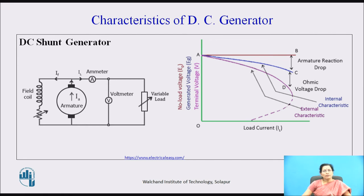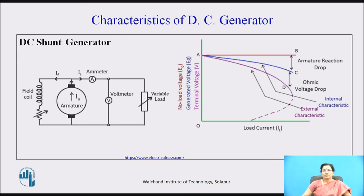If we decrease the load resistance beyond some limit, the AD curve turns back as shown by the dotted line in the figure, indicating that as we increase the load current, the terminal voltage drastically decreases due to armature reaction and ohmic voltage drop. So there is a limit to how much we can decrease R_L — we cannot decrease the load resistance indefinitely for this shunt generator.